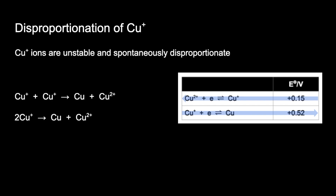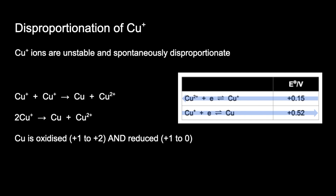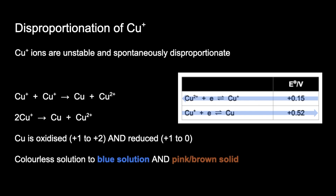This is the disproportionation of Cu⁺ because copper has been oxidised from +1 to +2 in Cu²⁺ and also reduced to the element in the zero oxidation state. For observations: Cu⁺ ions in solution are colourless (3d¹⁰ configuration means white solid but colourless in solution). Copper metal is a pinky brown solid. Cu²⁺ ions are blue. So the observation is a colourless solution forming a blue solution and a pink-brown solid.